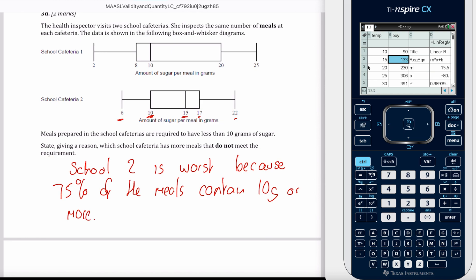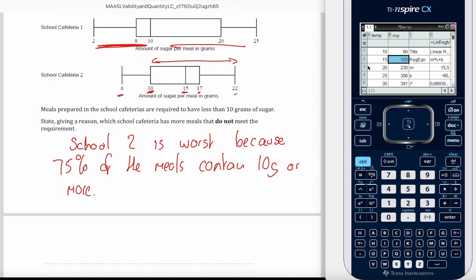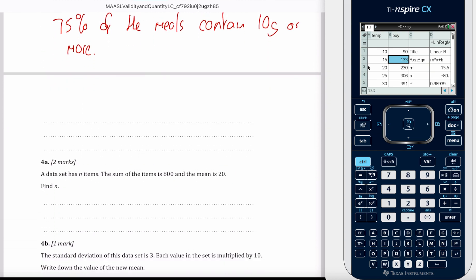Yeah, so here, 50% in school 1, 50% of the meals meet the criteria. 50% don't meet the criteria. But here, we've got 75% of the data that don't meet the criteria. So that's the do not meet. I think that's question 3 done.